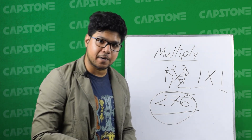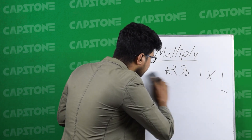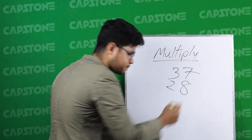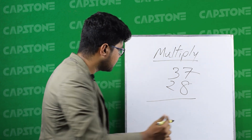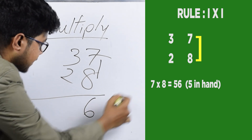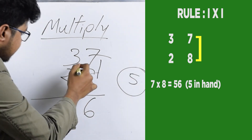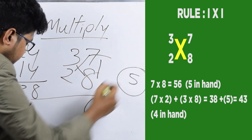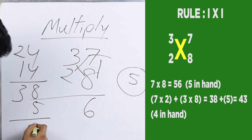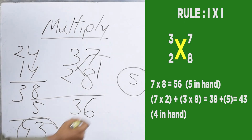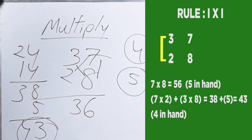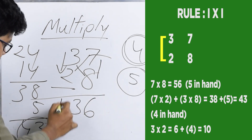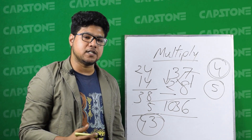So let's proceed with practice. Let's take any number like 37 into 28. First, the cycle I: 7 into 8 is 56, carry 5. Next, cycle X: 3 into 8 is 24, plus 7 into 2 is 14, so 24 plus 14 plus carry 5 is 43, carry 4. Last, cycle I: 3 into 2 is 6, plus carry 4 is 10. So the answer is 1036.